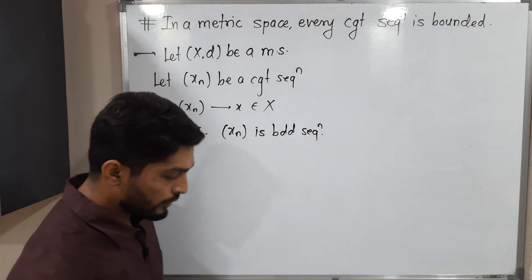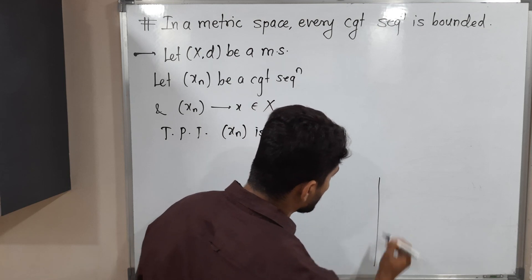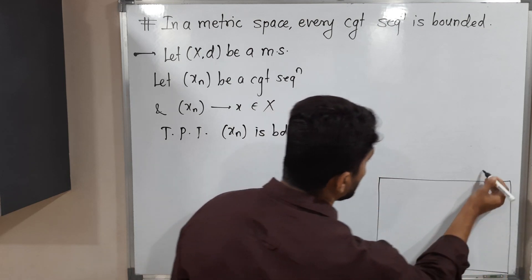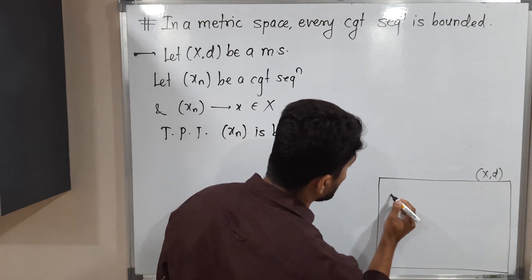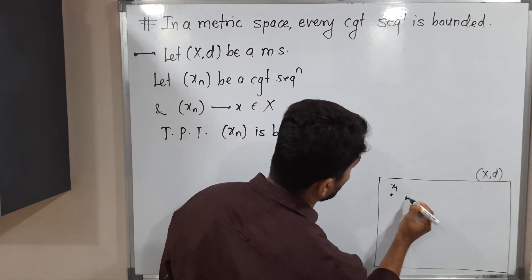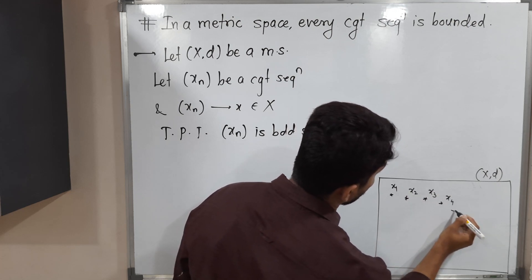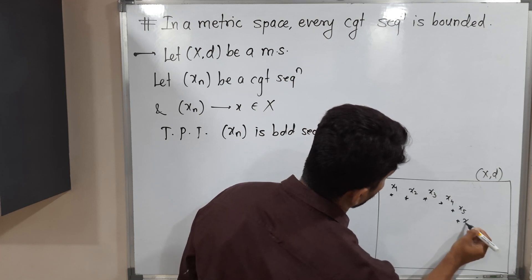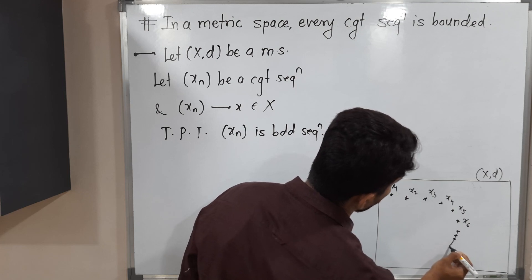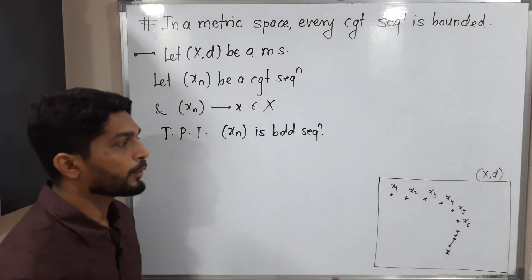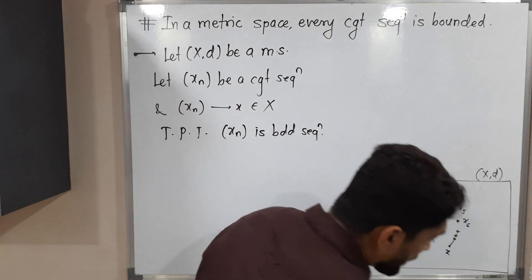Let us draw a diagram so the concept will be clear. This is our metric space (X, d). I am assuming any convergent sequence — suppose this is x1, x2, x3, x4, x5, x6, x7, x8, x9, x10, and so on. Suppose it converges to a point x, and we have to prove that it is a bounded sequence.